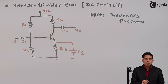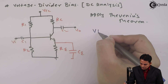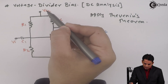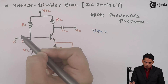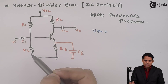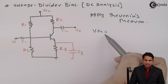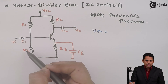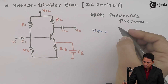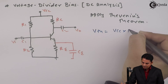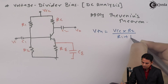To apply Thevenin's theorem, we first find VTH. The Thevenin's equivalent voltage can be calculated as VTH = VCC × R2 / (R1 + R2). So VTH is equal to VCC multiplied by R2 divided by R1 plus R2.